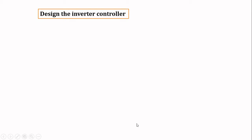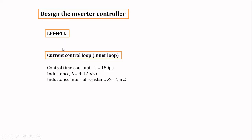Second, we design the controller. The control of the grid-connected inverter includes a low-pass filter, a phase-locked loop, and a current loop controller. We need to choose various control time constants. I have chosen 150 microseconds. The inductance equals 4.42 mH as designed previously, and the internal resistance equals 1 mΩ. Therefore, Kp equals 29.5 and Ki equals 6.67.